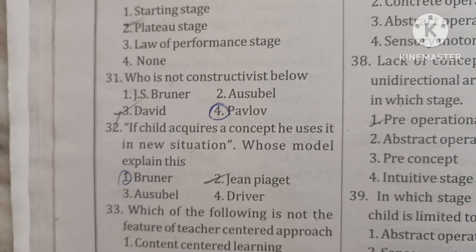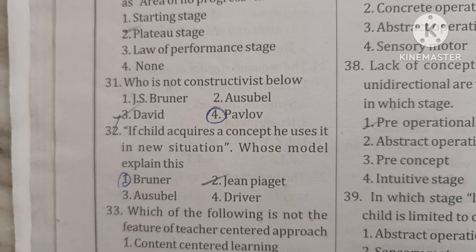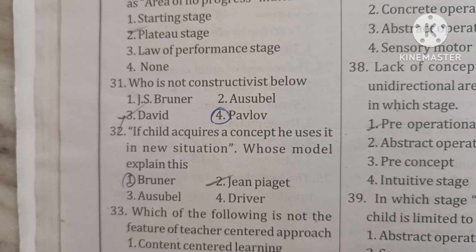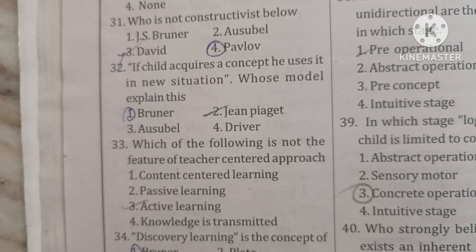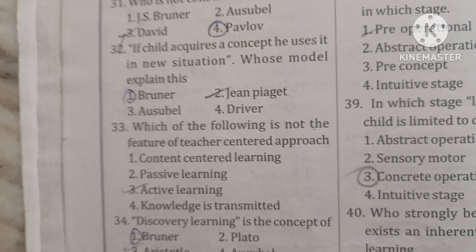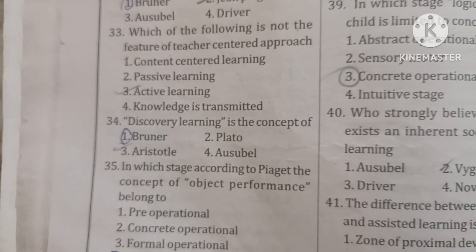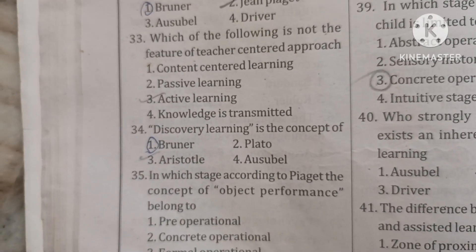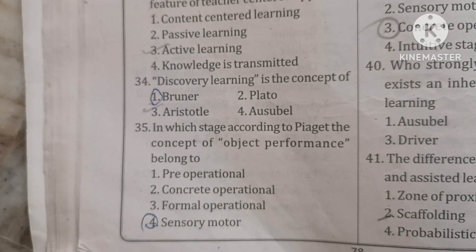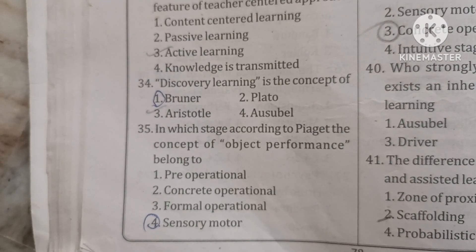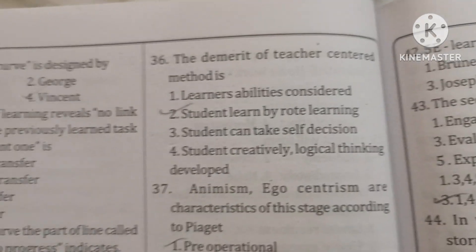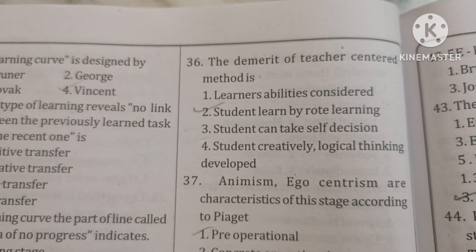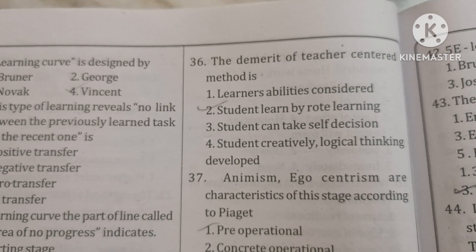Who is not a constructivist? Pablo. If a child acquires a concept and uses it in a new situation, whose model explains this? Bruner. Which of the following is not a feature of the teacher-centered approach? Active learning. Discovery learning is the concept of Bruner. According to Piaget, the concept of object permanence belongs to the sensory motor stage. The demerit of the teacher-centered method is that students learn by rote learning.